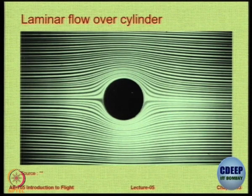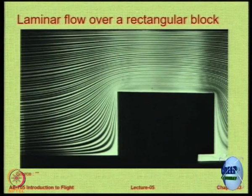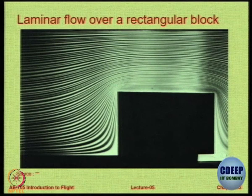Proceeding further, even over a rectangular block the flow can be laminar. The shape of the body alone does not guarantee whether the flow will be turbulent or laminar. As we saw over a wing, a cylinder, and a rectangular block, you can still have laminar flow. Shape is important but not the only parameter — there are other parameters which decide whether flow is laminar or otherwise.